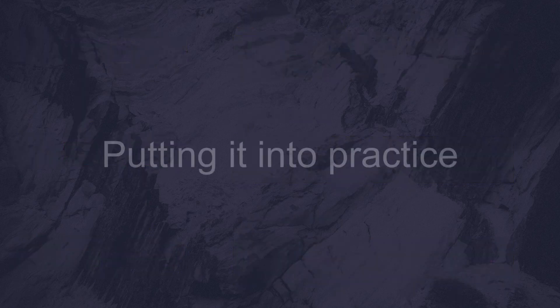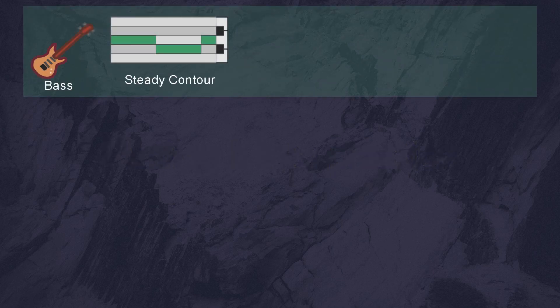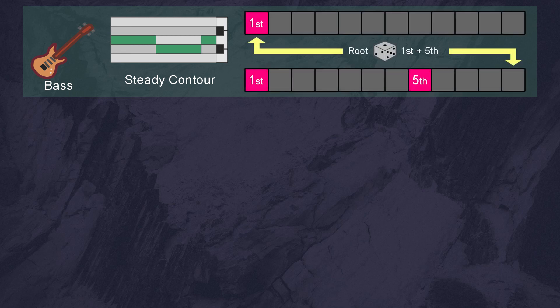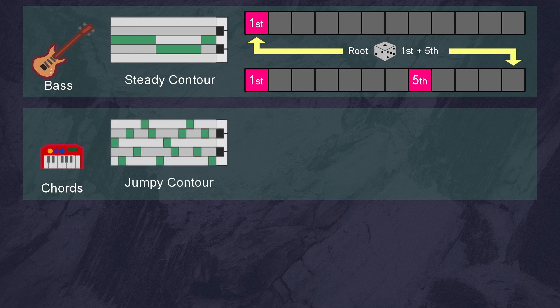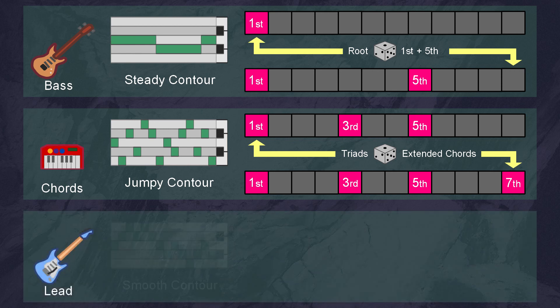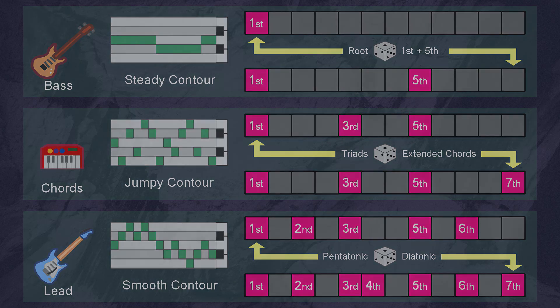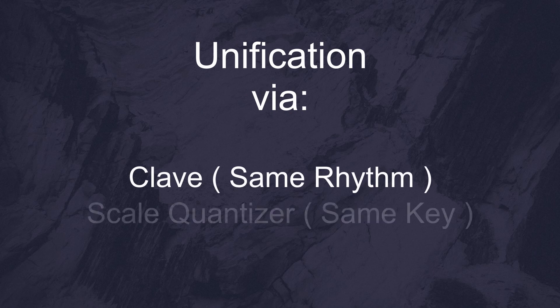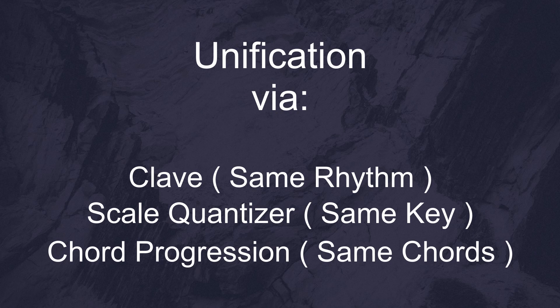With all of these tools combined, it becomes easy to assign parameters to suit different instruments. For example, a bass line might feature a steady contour, so we might stick to simple intervals, like the root note or the fifth. To play chords, we might use a different contour pattern and stick to the intervals of the triad or extended chords. And the lead instrument might have a smooth contour and play in either a pentatonic or diatonic intervals. And since everything is working to the same rhythmic base of the clave, and are quantized to the same key with a scale quantizer, and are playing the same chords, everything will stay unified.